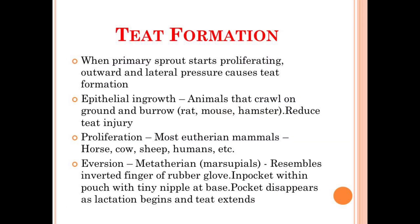Now we will talk about the formation of teats. When the primary sprout starts proliferating outward, lateral pressure causes teat formation. Basically, when the primary sprout starts to differentiate outward, the lateral pressures of the different tissues involved in the udder lead to the formation of the teat. The whole teat formation has three different types found in different animals.